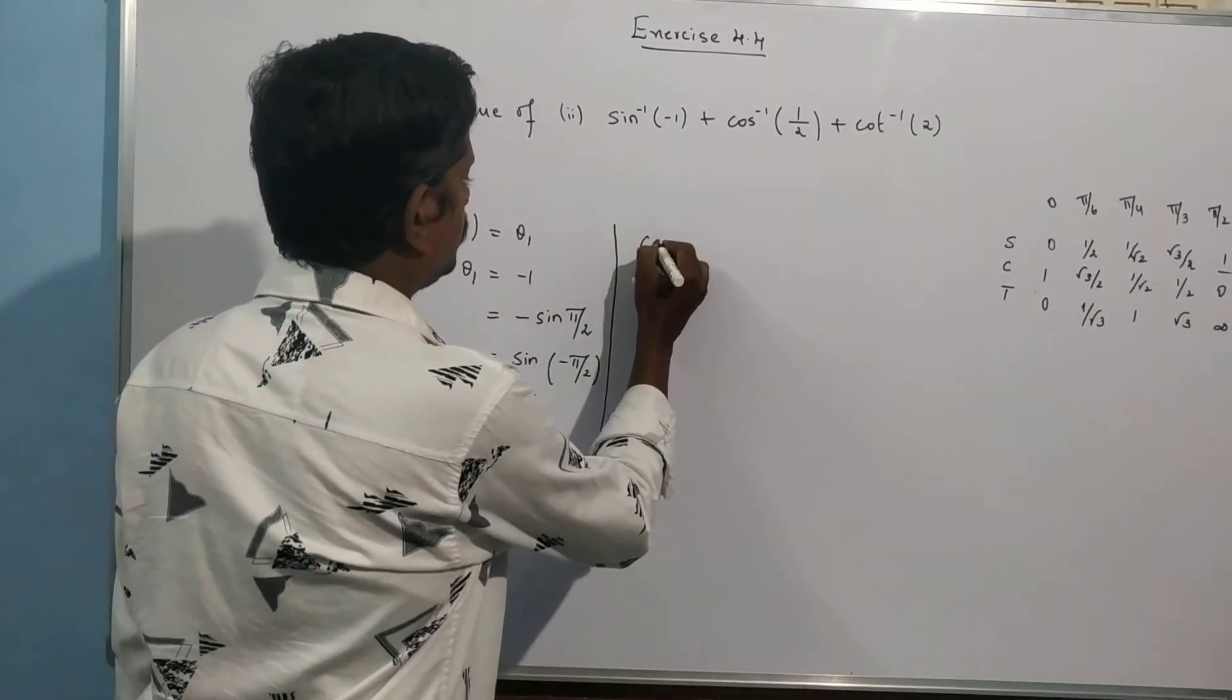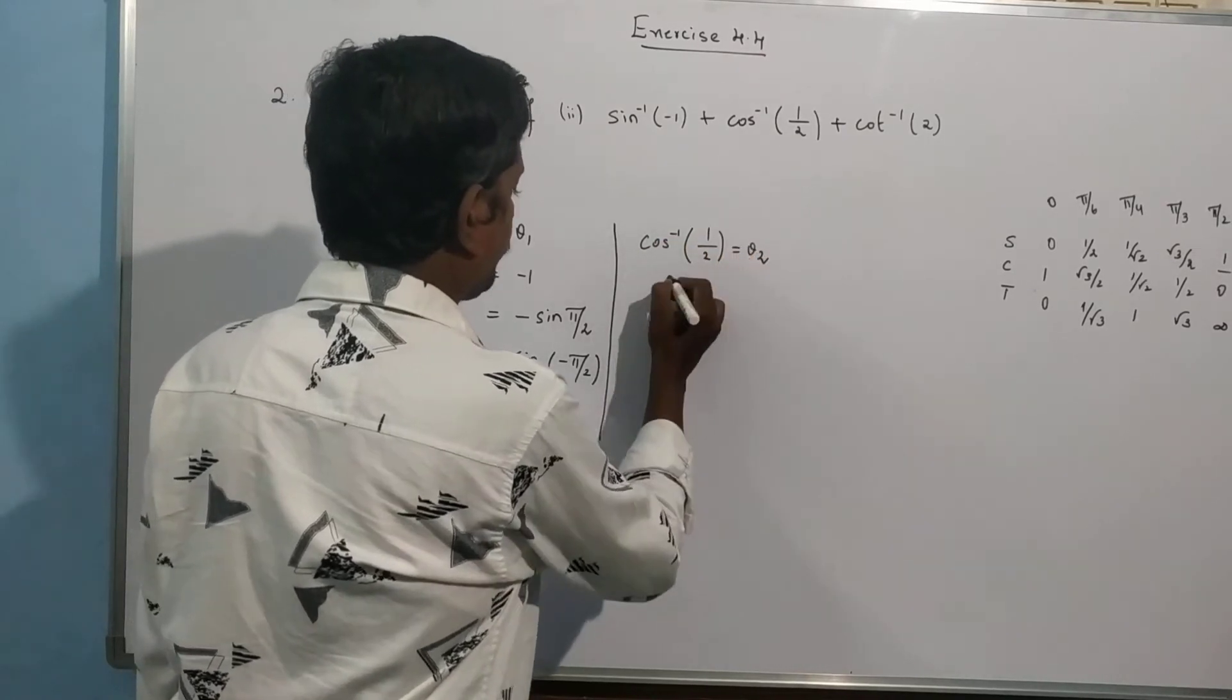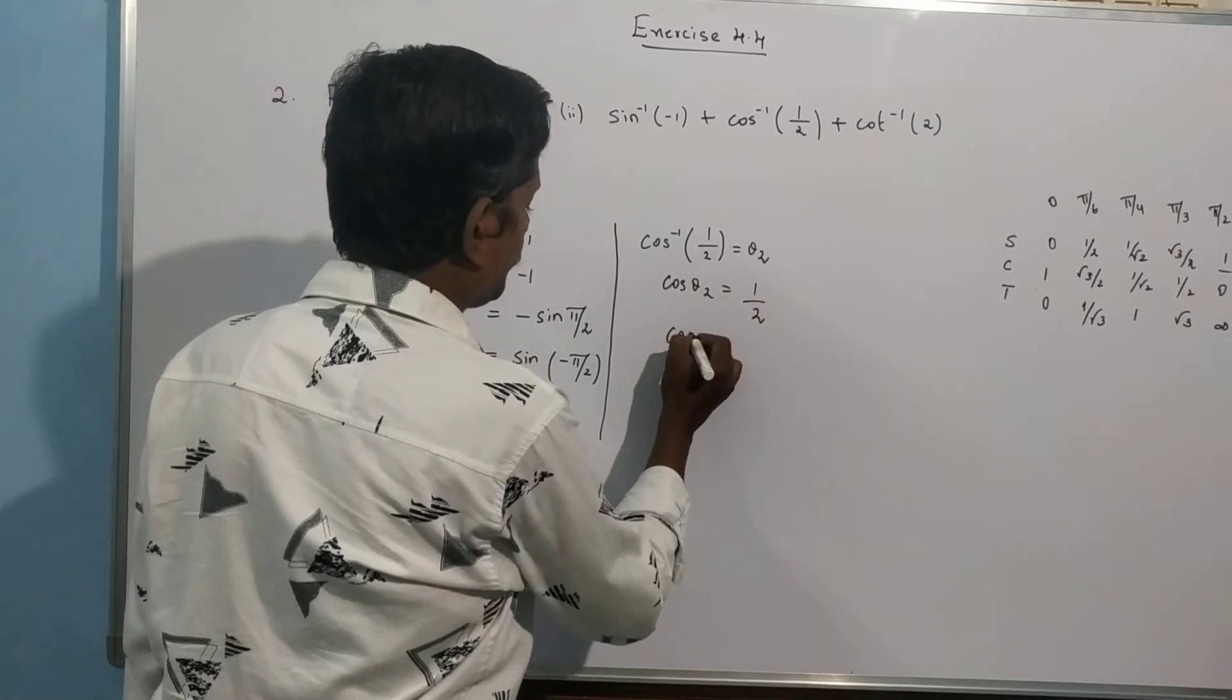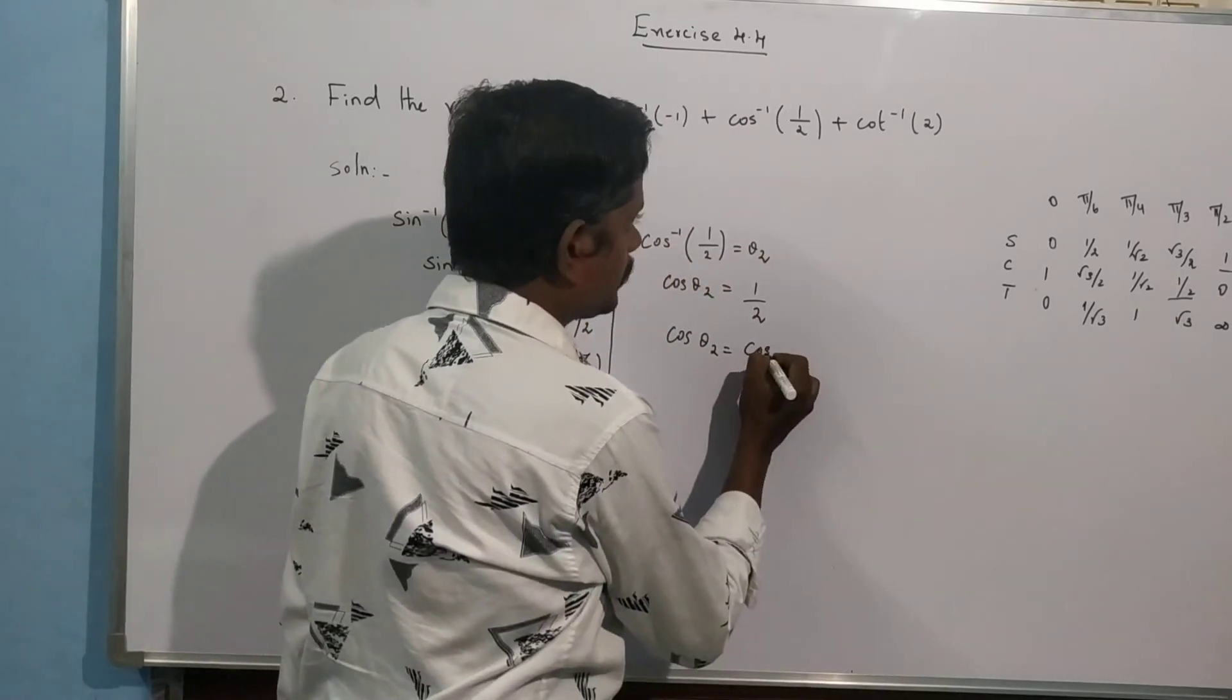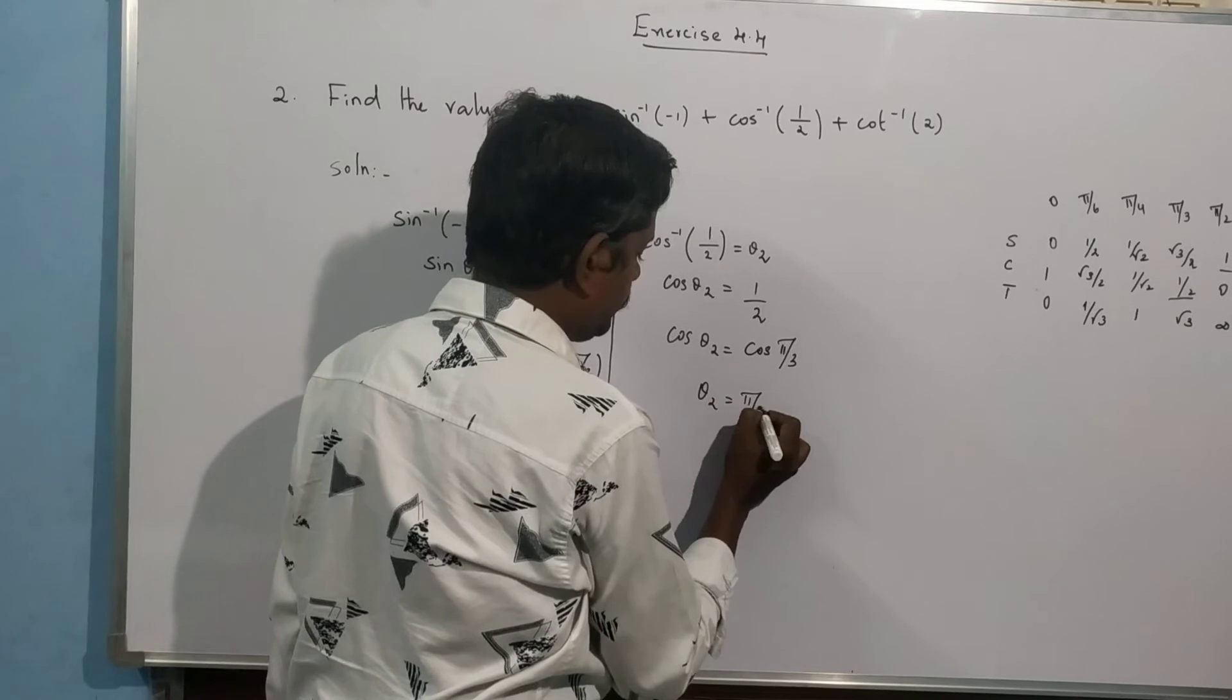At the same time, cos inverse of 1 by 2, this is theta 2. Cos theta 2 equal to 1 by 2. 1 by 2 is cos pi by 3, then theta 2 equal to pi by 3.